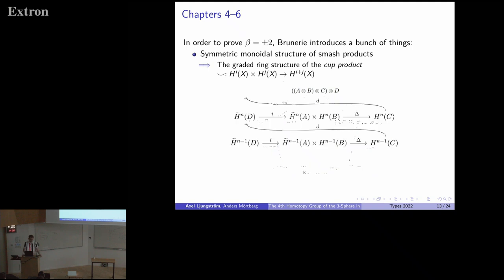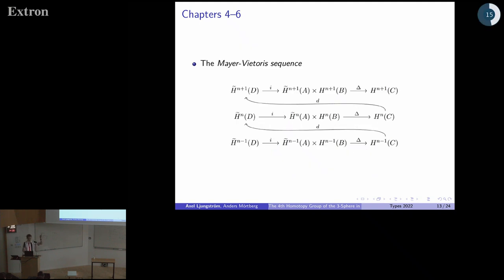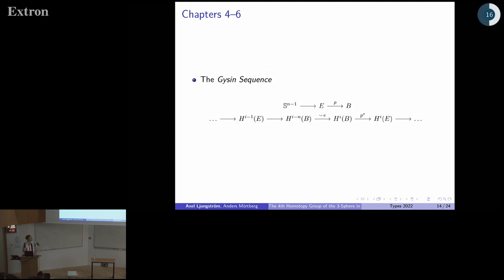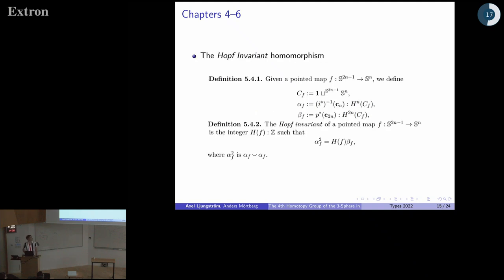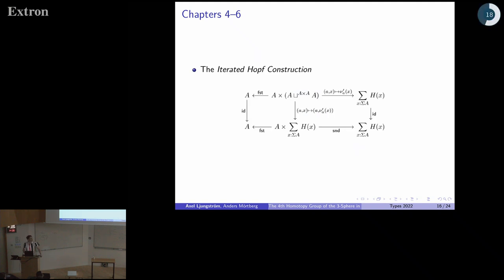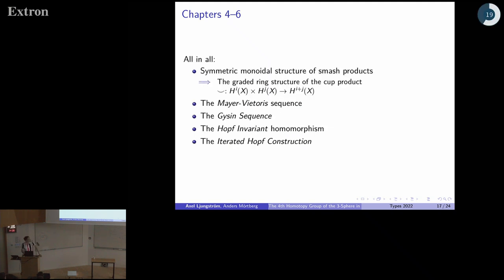Guillaume did this using smash products. So without smash products, we're stuck already. And in addition, we need to have a lot of other results about cohomology. We're going to need the Mayer-Vietoris sequence, the Gysin sequence, the Hopf invariant homomorphism, and iterated Hopf construction. Here's a list of all the stuff we need. It's fairly advanced stuff. This is the issue. We get stuck already here. We get stuck in the very beginning.